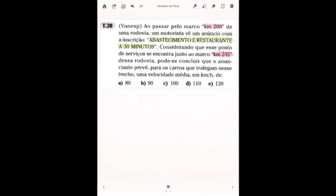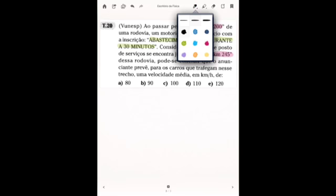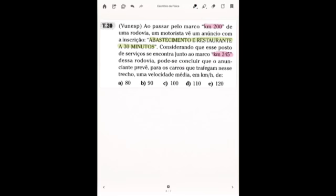Então veja lá, passou para vocês o seguinte, passou tanto o delta T quanto o delta S. E eu quero antes de mais nada, relembrar com vocês a fórmula de velocidade média. Velocidade média é igual a delta S sobre delta T.